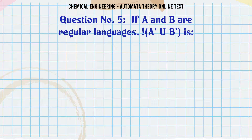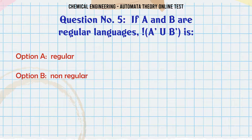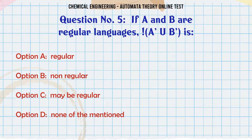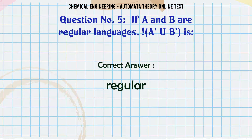If A and B are regular languages, A ∪ B is: A. Regular, B. Non-regular, C. May be regular, D. None of the mentioned. The correct answer is: Regular.